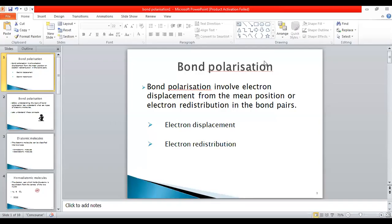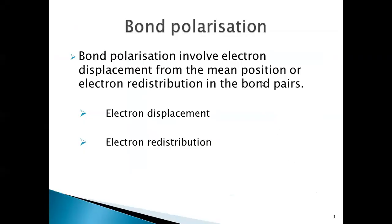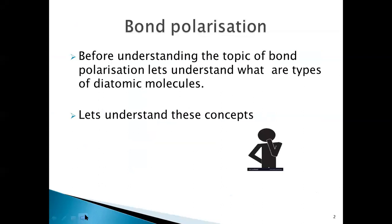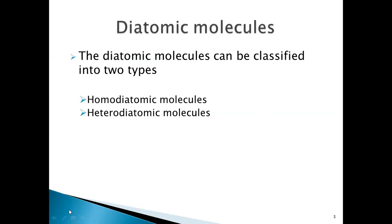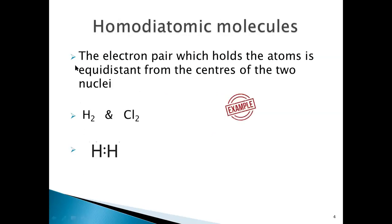In this video, I'm going to discuss bond polarization under Chapter 4, Structural Theory in Organic Chemistry. Before understanding what bond polarization is, let's understand a few concepts: what are diatomic molecules and how many types of diatomic molecules are there. There are two types — homo diatomic molecules and hetero diatomic molecules.